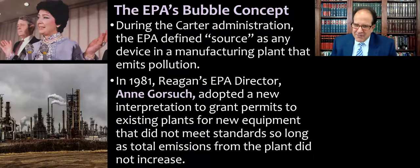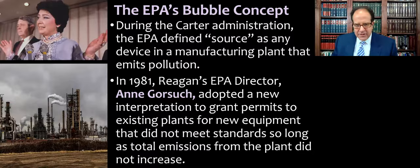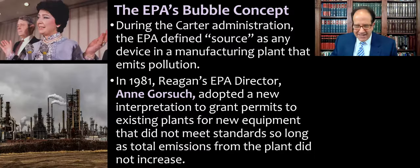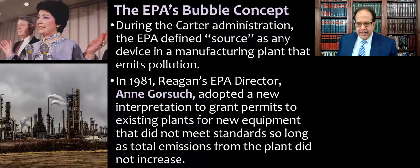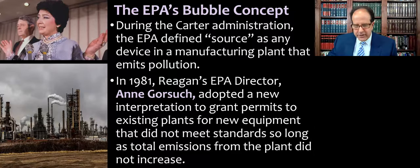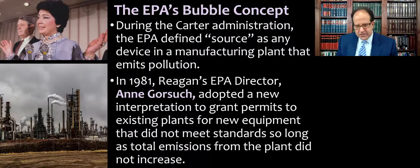These amendments happened in 1977 during the Carter years, and during the Carter administration the EPA defined 'source' as any device in a manufacturing plant that emits pollution — meaning every single item in a refinery would be a source, and you couldn't put in anything new unless it basically emitted near-zero pollution. Then Ronald Reagan won the White House in 1980, and in 1981 Reagan's EPA director, Ann Gorsuch, adopted a new interpretation to grant permits to existing plants for new equipment that did not meet the standards, so long as total emissions from the plant did not increase. Ann Gorsuch is Neil Gorsuch's mom, and in a twist of historical irony, Neil Gorsuch actually doesn't like Chevron deference.